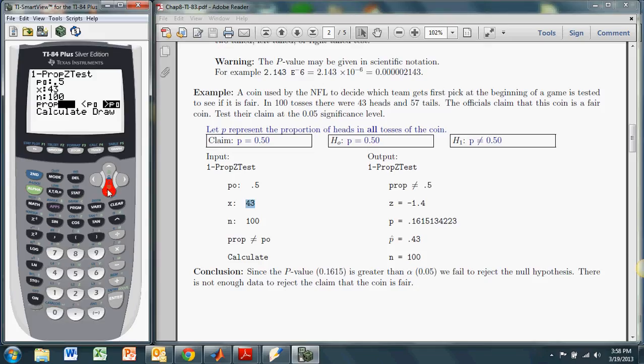Then we go down to selecting whether this is a two-tailed, left-tailed, or right-tailed test. This is a two-tailed test, so I'm going to highlight the not equal to sign, hit enter, and go down to calculate.